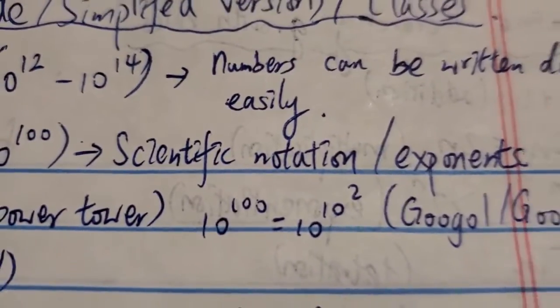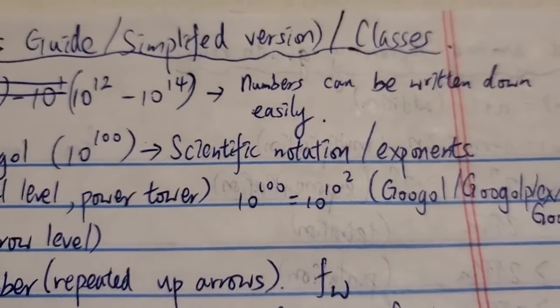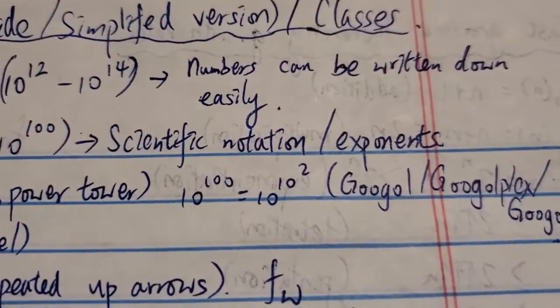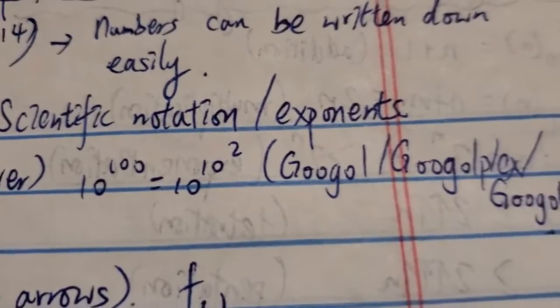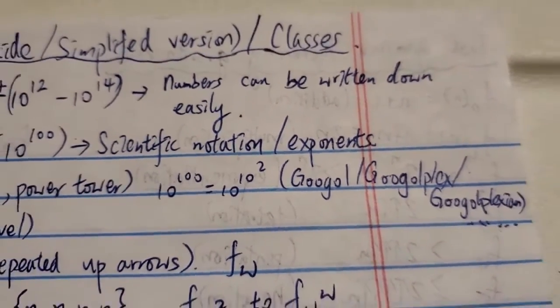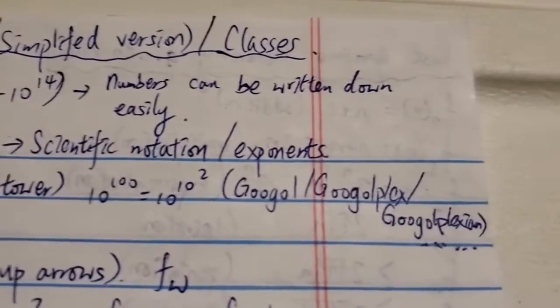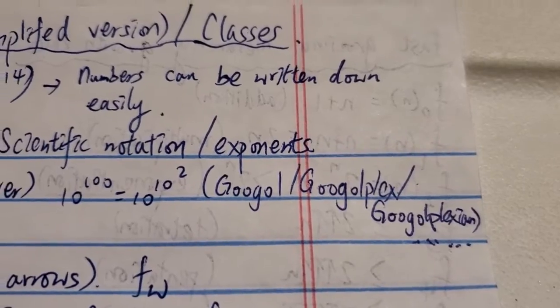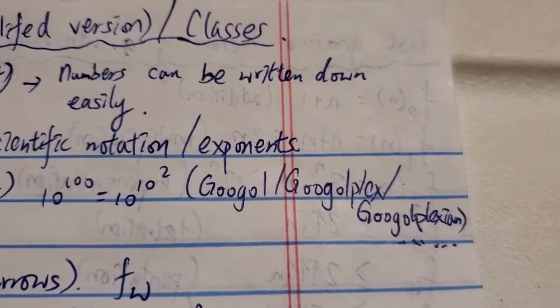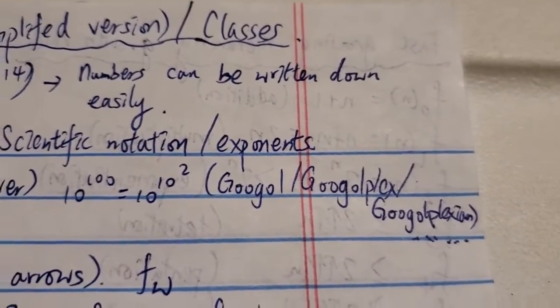Basically, Googol, another way to write it is 10 to the 10 to the 2, so kind of like a power tower already. This class of numbers include the Googol family of numbers, so Googol, Googolplex, Googolplexian, or Googol triplex, something like that.